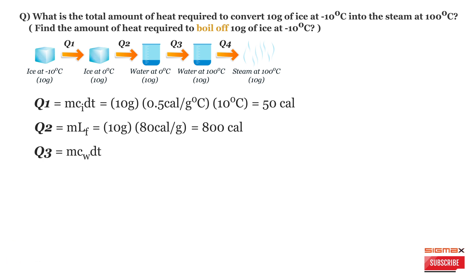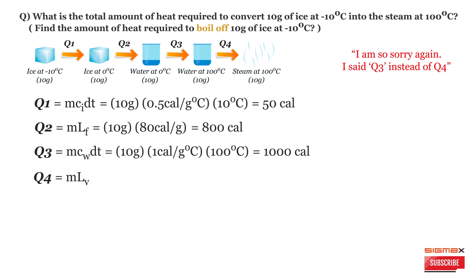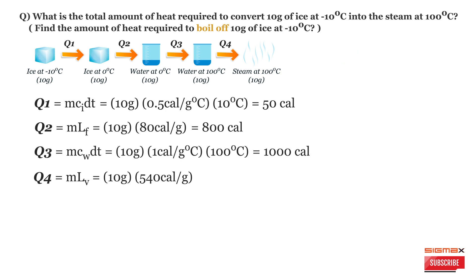Q3 = 10 grams × 1 calorie per gram per degree Celsius × 100°C = 1000 calories. Q4 represents the state change of water into steam, so Q4 = m × L_V. The latent heat of vaporization for water is 540 calories per gram. Hence, Q4 = 10 grams × 540 calories per gram = 5400 calories.